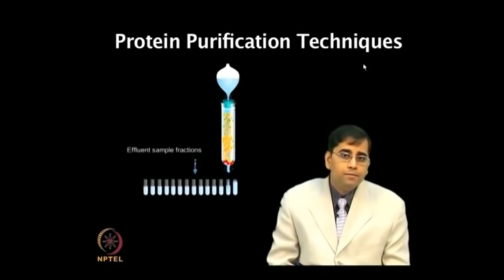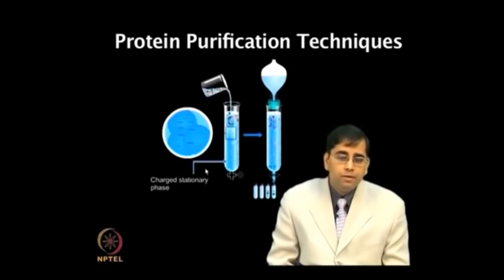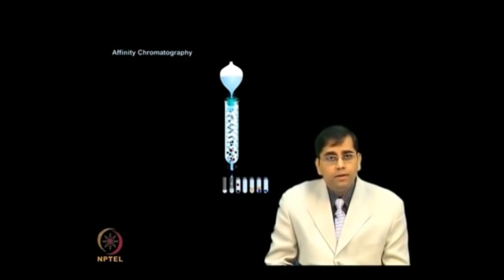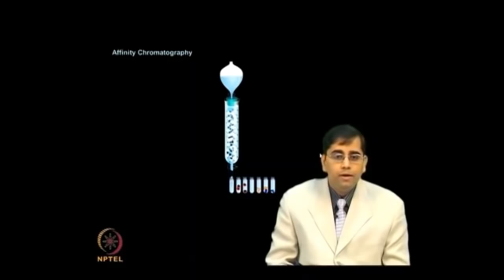Ion exchange chromatography relies on differences in the number and distribution of charge groups at defined pH and temperature. Affinity chromatography is based on the affinity of a protein to other biomolecules, where the protein of interest binds through a specific interaction.